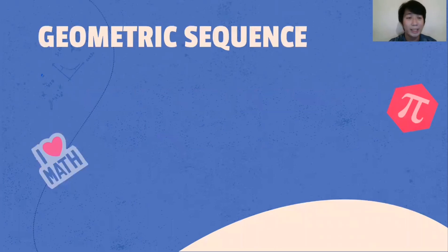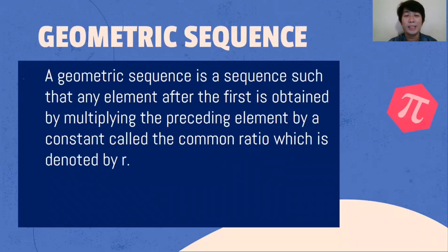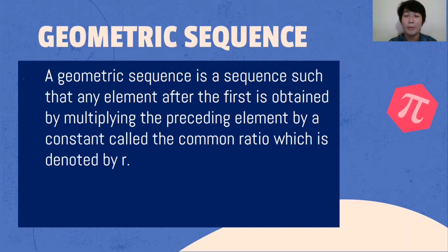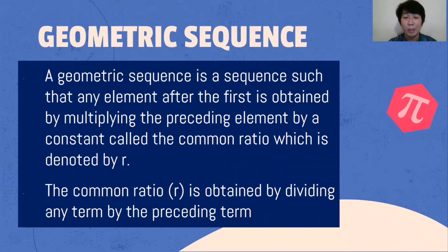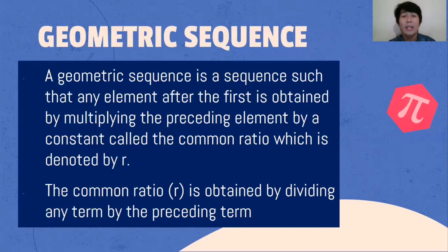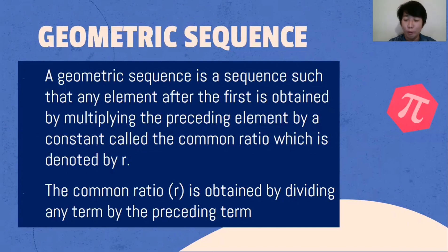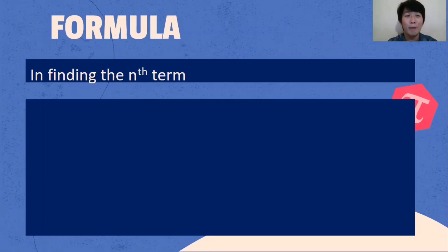So what is Geometric Sequence? A Geometric Sequence is a sequence such that any element after the first is obtained by multiplying the preceding element by a constant called the common ratio, which is denoted by r. The common ratio r is obtained by dividing any term by the preceding term. In arithmetic sequence, we add the common difference to get the next term. In Geometric Sequence, we multiply the common ratio to get the following terms.